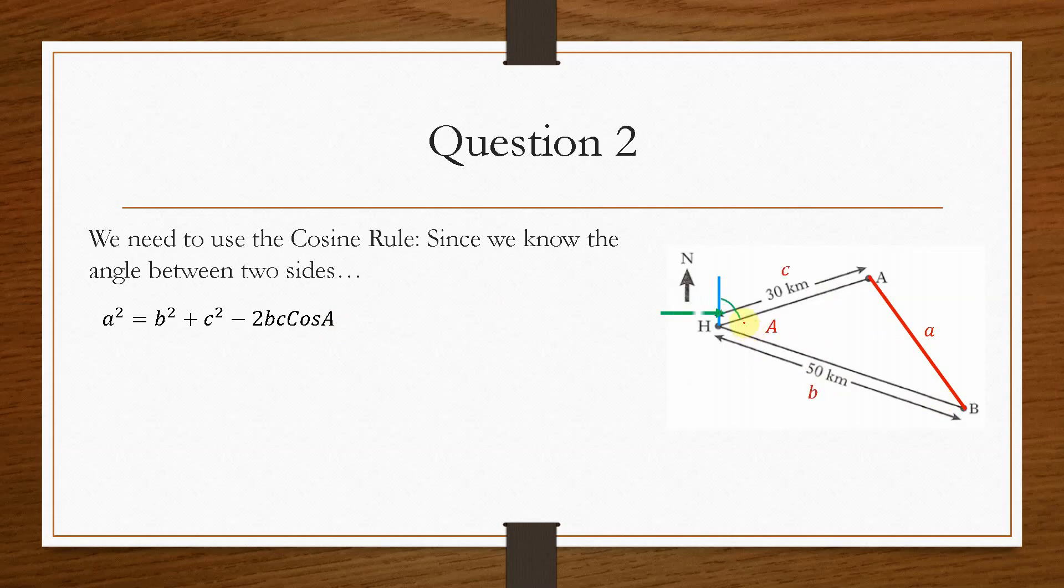Now we know that the yacht A is on a bearing of 72 degrees. So that means from north to this line is 72 degrees. And then we know that B is on a bearing of 140 degrees. So therefore if we take the difference of these away, that will give us this angle in here. So that means our angle is 68 degrees.